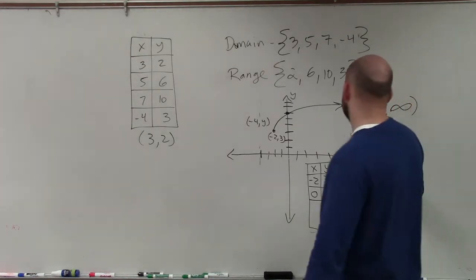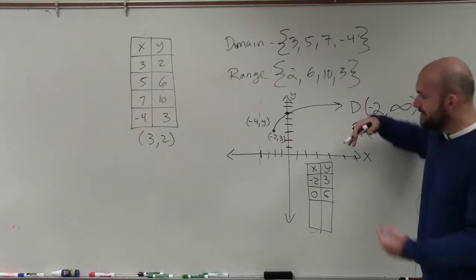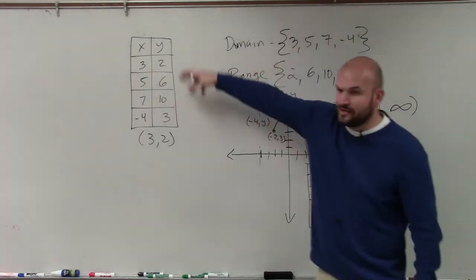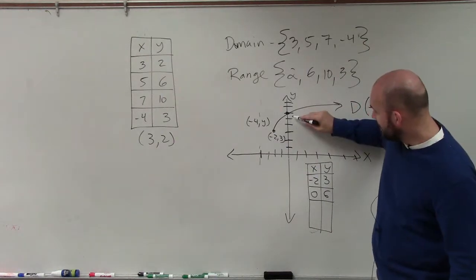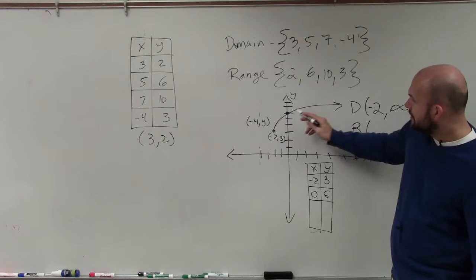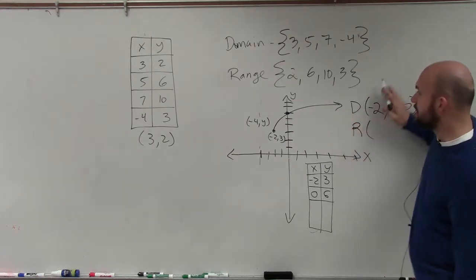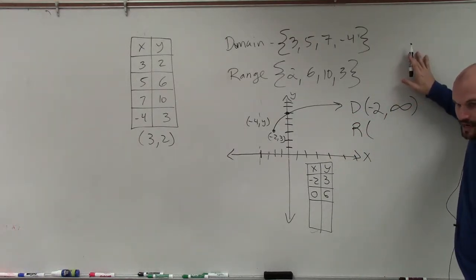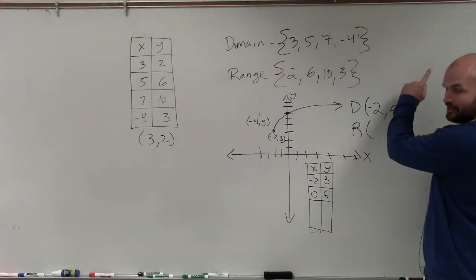Now let's look at the range. The range is going to be set of all y values, right? Now we know there's a y value at 6. We know there's a y value at 3. As this graph goes to the right, it's also going up, right? So there's always going to be larger and larger y values.